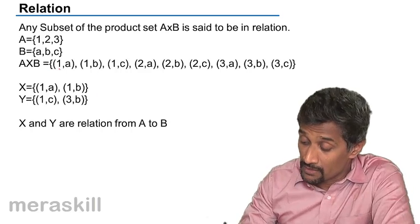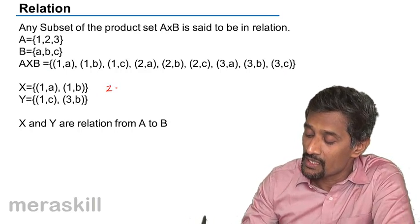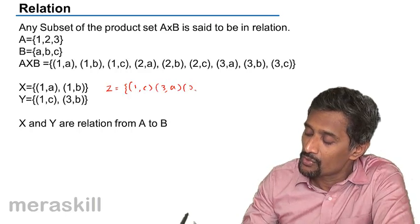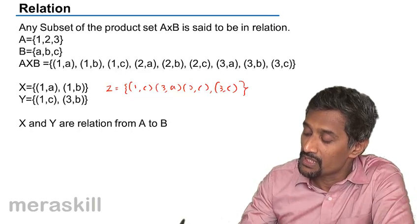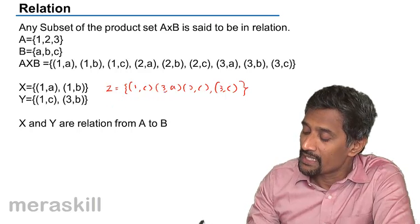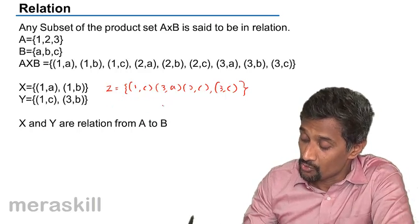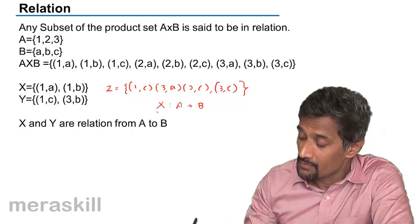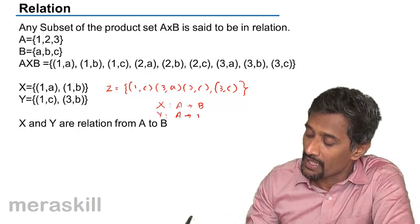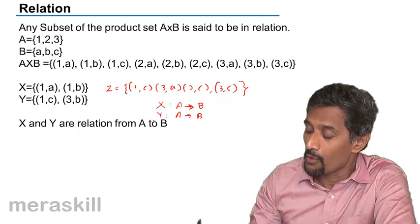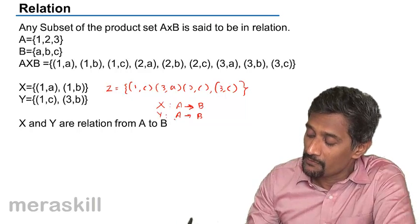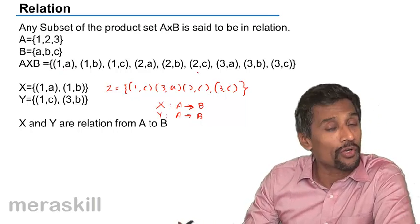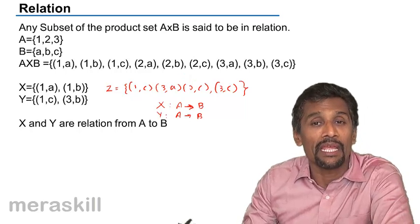So if you take any subset of A cross B, including the whole set, you could take a subset like {1C, 3A, 2C, 3C}. This is a subset of A cross B. Then we say this subset is a relation from A to B. In every ordered pair, the first element comes from A and the second element comes from B. Any subset of A cross B is called a relation from A to B.